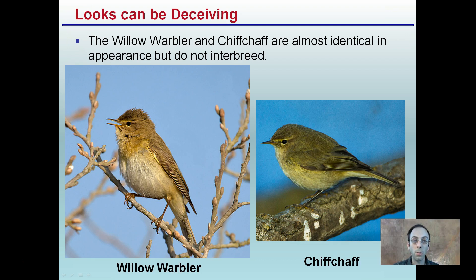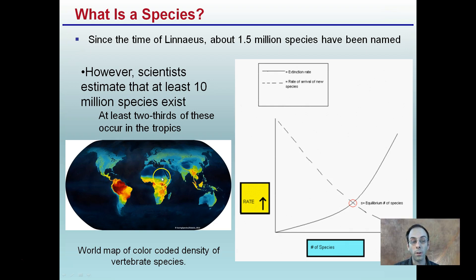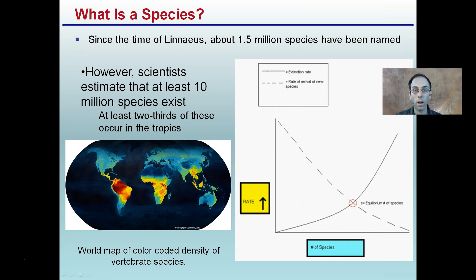Looks can be deceiving when basing species identification on phenotype. The willow warbler and the chiffchaff are almost identical in appearance but do not interbreed — so they are different species. There are about 1.5 million named species, but scientists estimate at least 10 million exist, with at least two-thirds occurring in the tropics. A world map shows high species density in tropical regions, while deserts like northern Africa show very low density. There is an equilibrium between extinction rate and new species formation rate that adjusts across all environments.